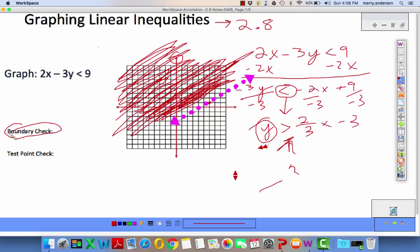Boundary check: I don't think we need to do a boundary check. We should be able to recognize that it's dotted right here. Dotted will be greater than or less than. Solid will be greater than or equal to, less than or equal to. Then we solve for y and say where the y is greater than, it's above.